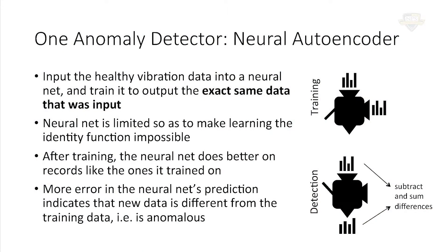What nonsense is this — we have that data, why do we want it back? Well, the story is that we don't use just any neural network here. We use one that's been crippled in a certain way so it's not capable of learning the identity function — the function that just gives you back whatever you give it. It actually can't learn that function. So the result is that after training, the neural network does better reproducing data that it's been trained on than data it has not been trained on.